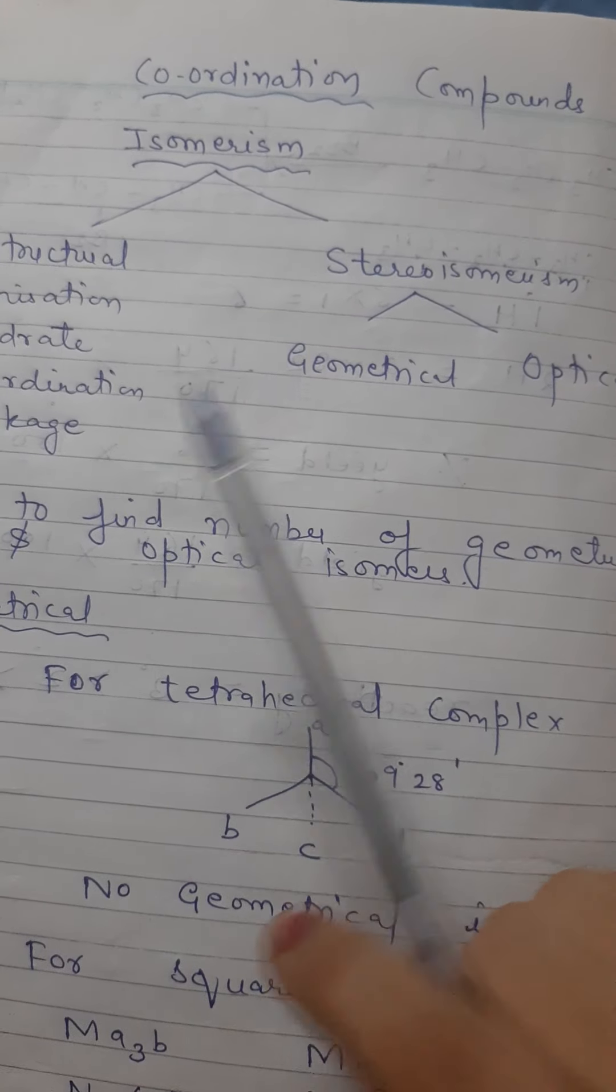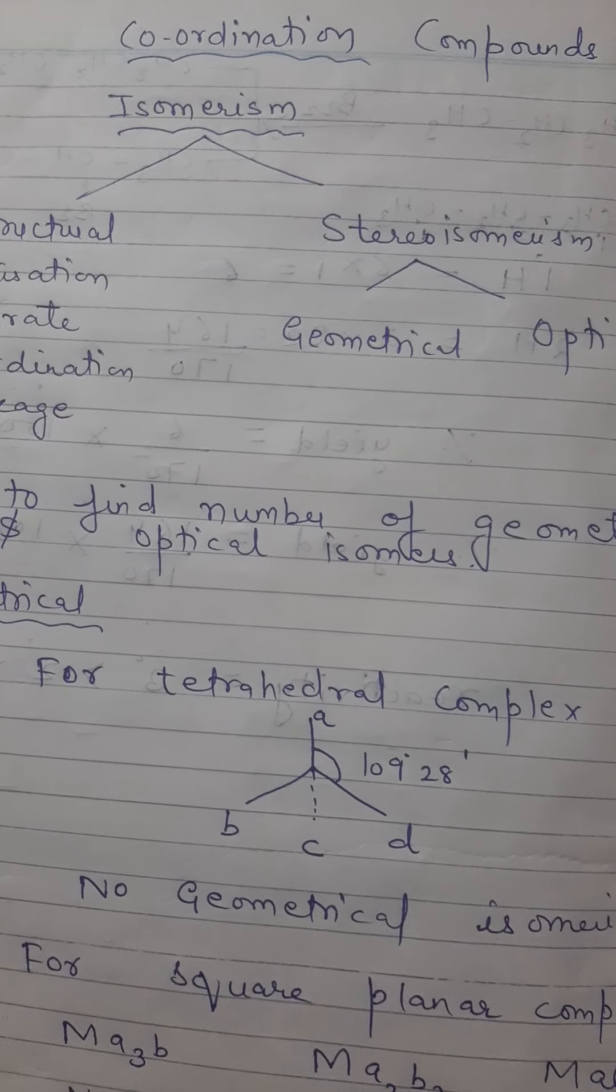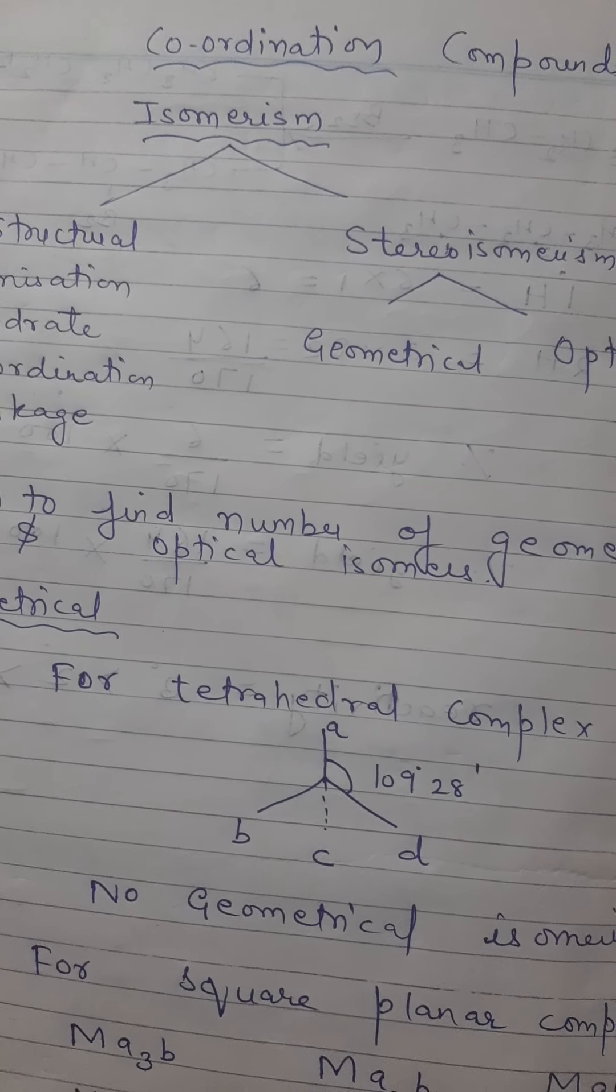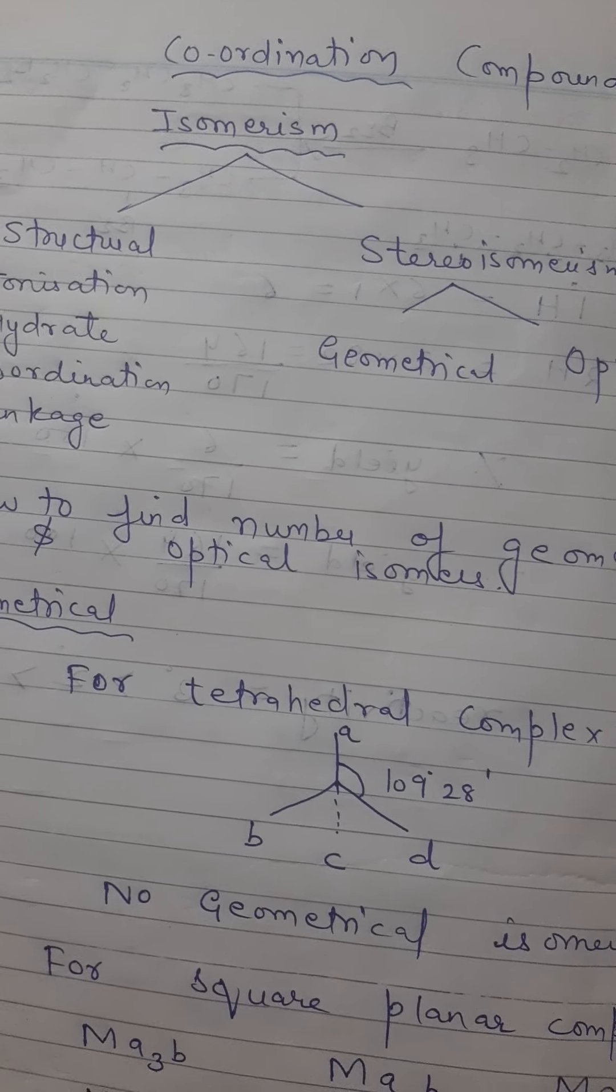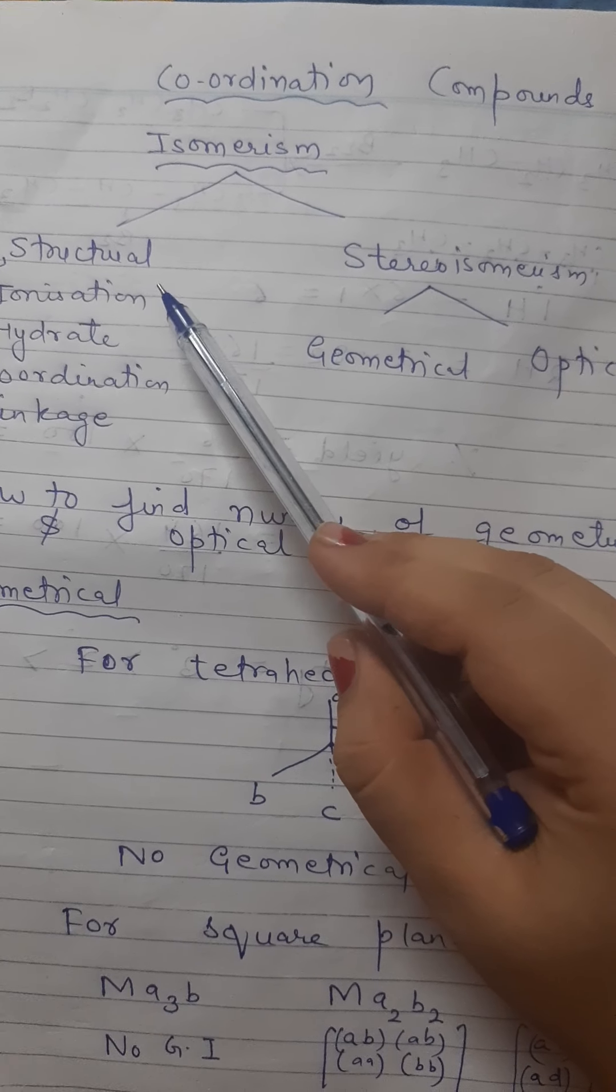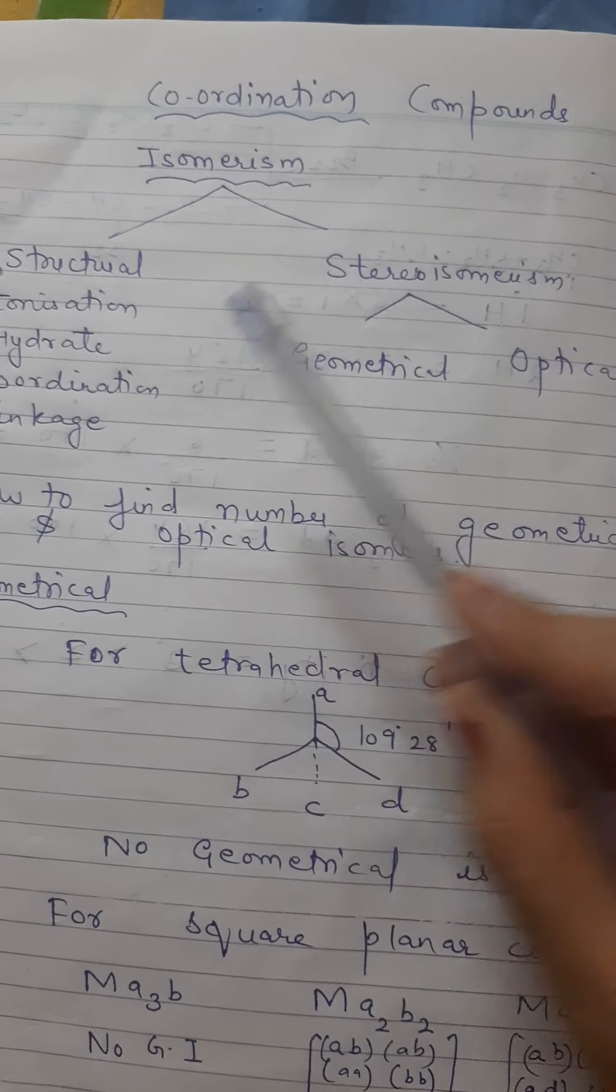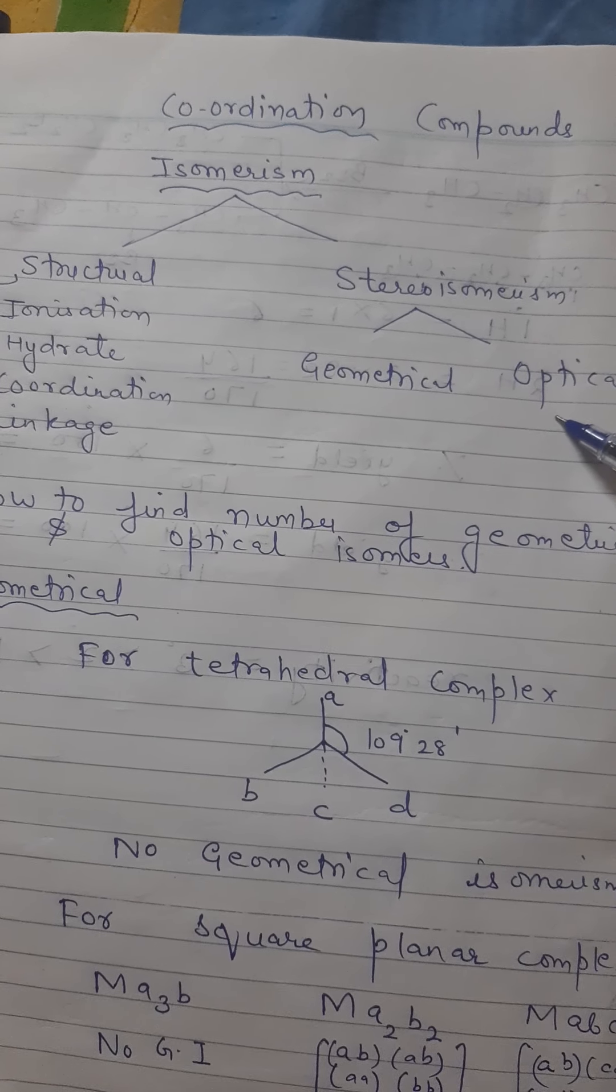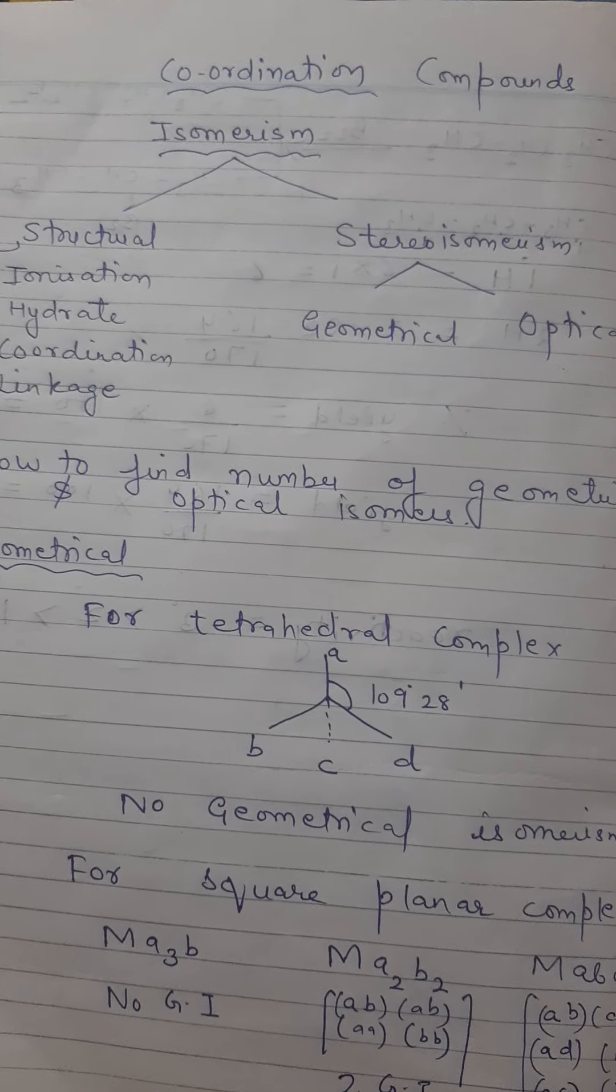Our today's main topic is how to find out the number of optical isomers for tetrahedral complex and for octahedral complex. There are some tricks to find out those isomers. Structural isomers are further categorized into ionization, hydrate, coordination, and linkage isomerism. Stereoisomerism is further categorized into geometrical and optical isomers. Our main topic is how to find out the number of geometrical and optical isomers.